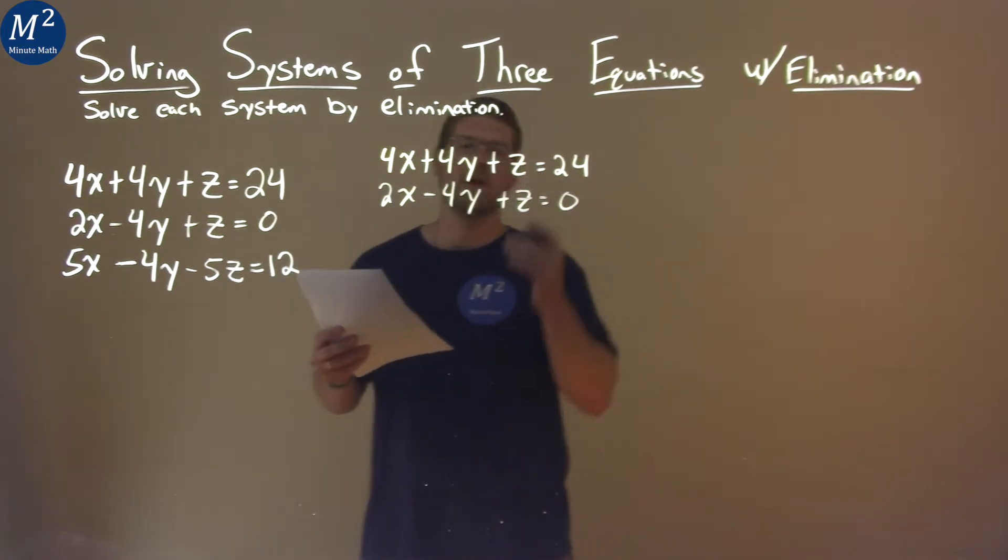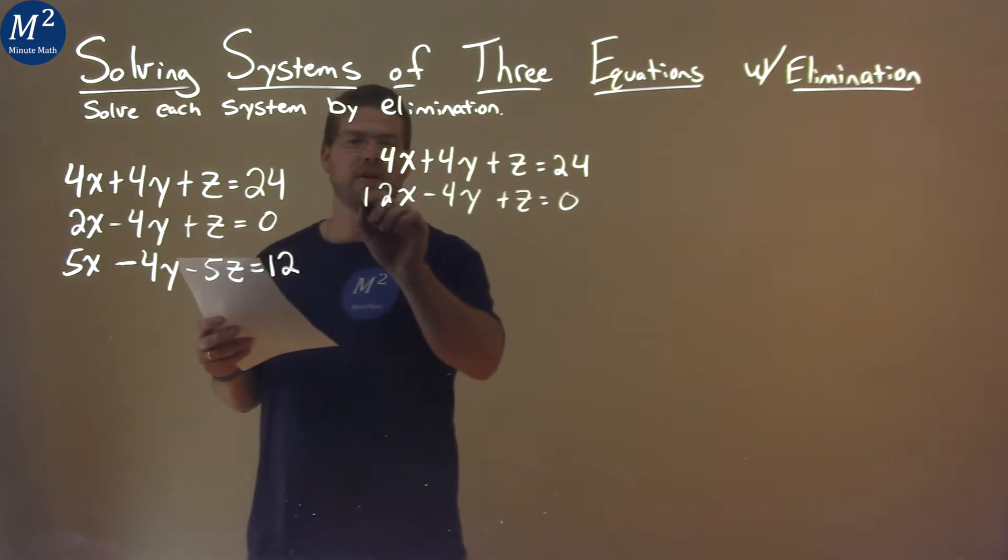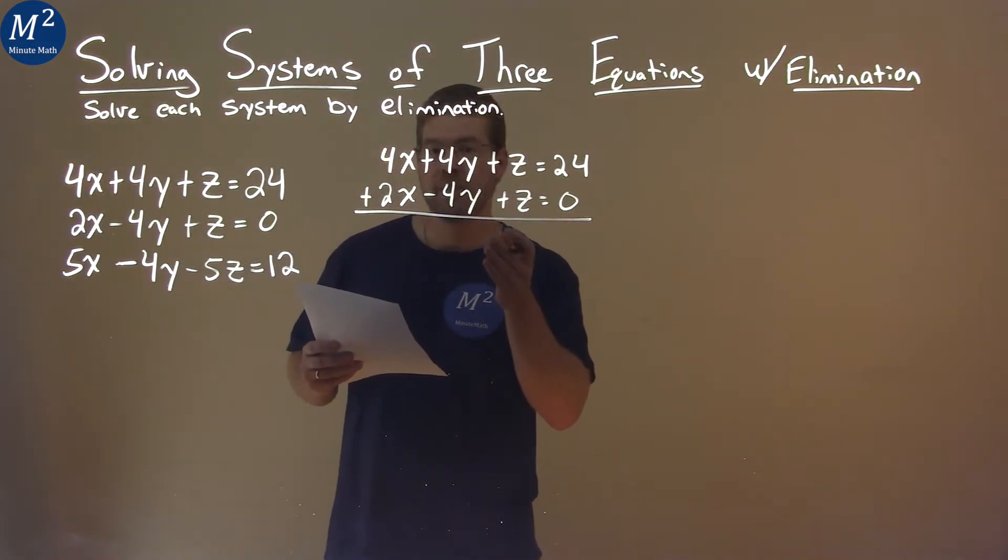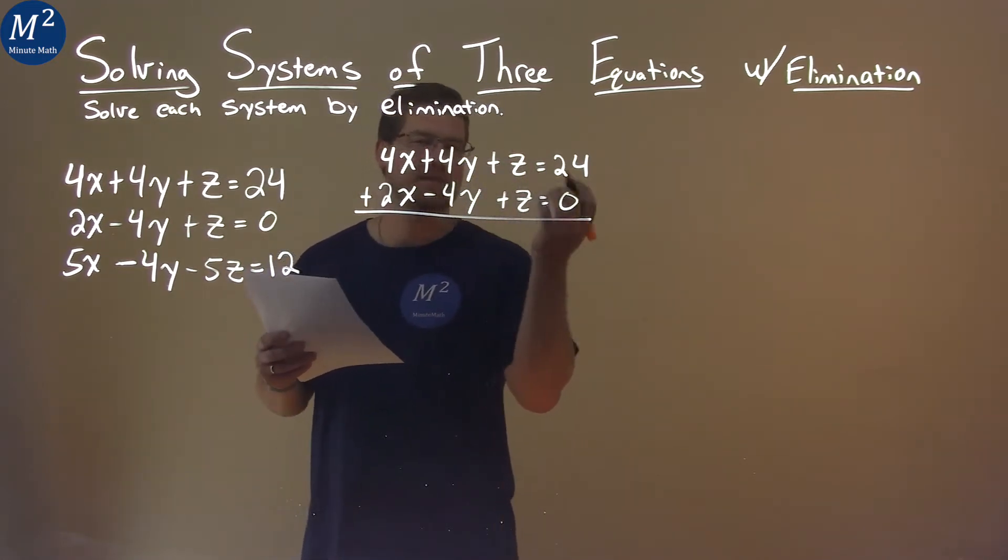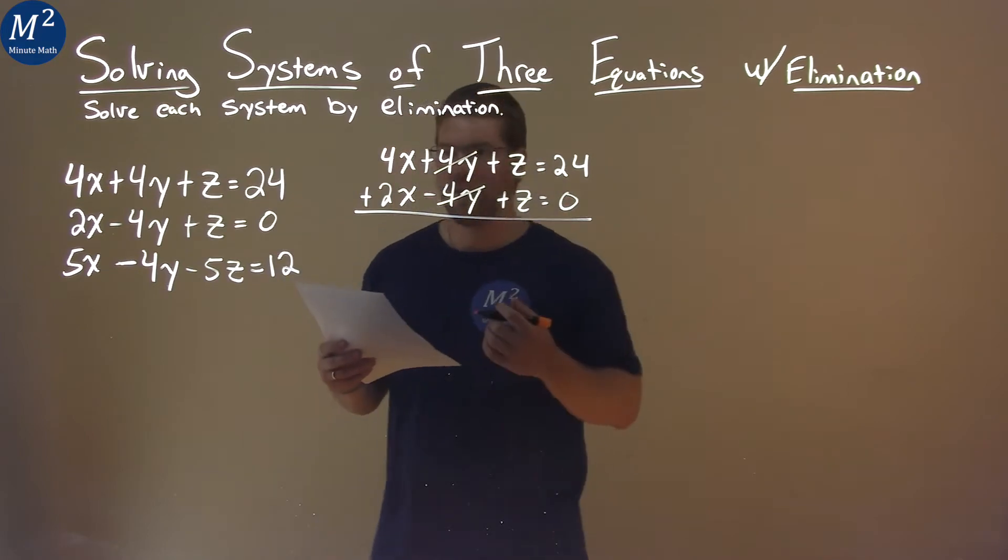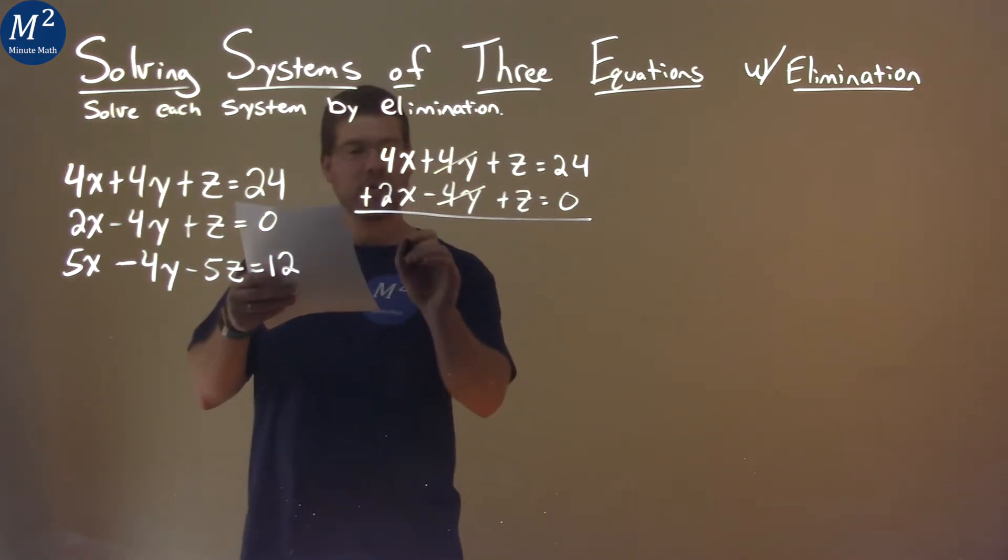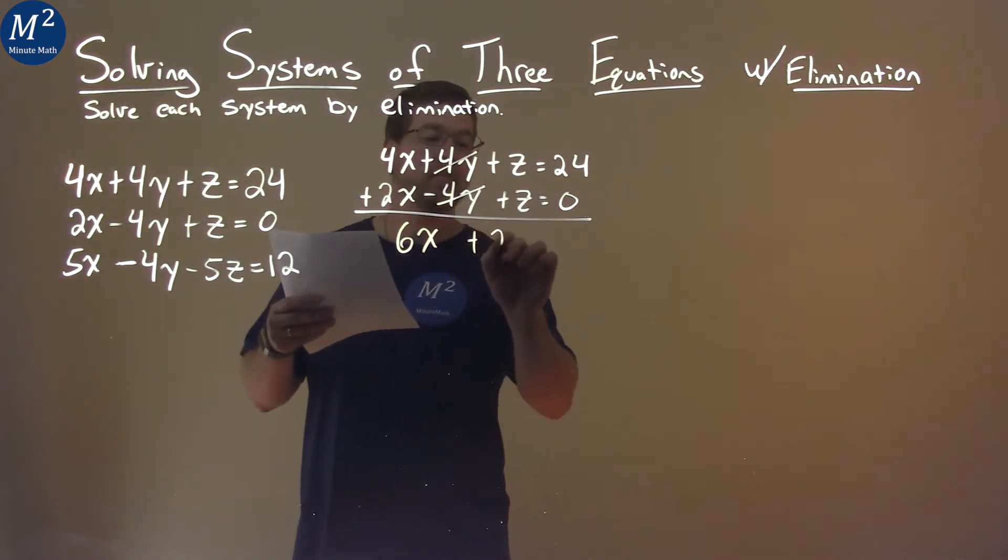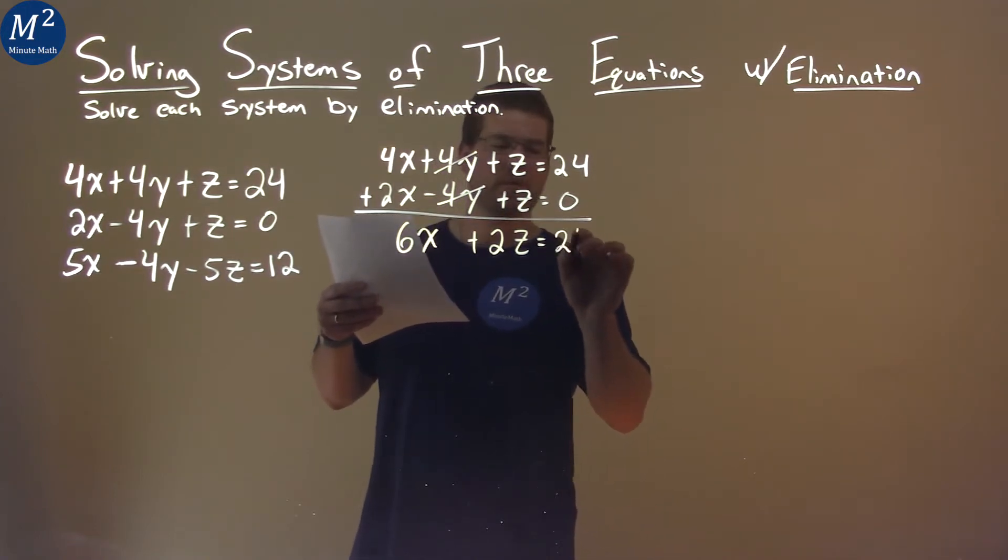And from here, what we can see is we can add the two values here to eliminate the variable y. 4y plus, or positive 4y minus 4y gives me 0. So they eliminate, hence the method, and we add the rest. So we have 4x plus 2x, which is 6x, and z plus z is 2z. 24 plus 0, well, 24. Not too bad.